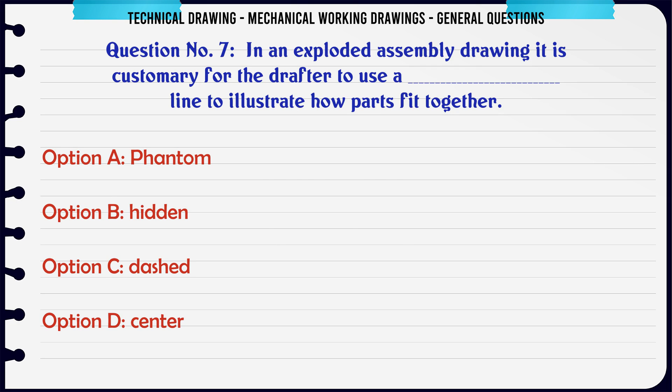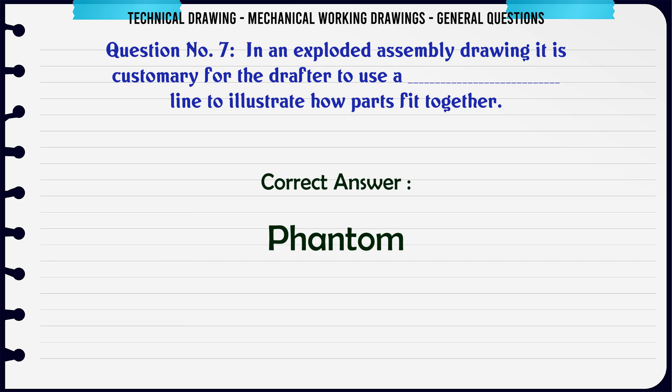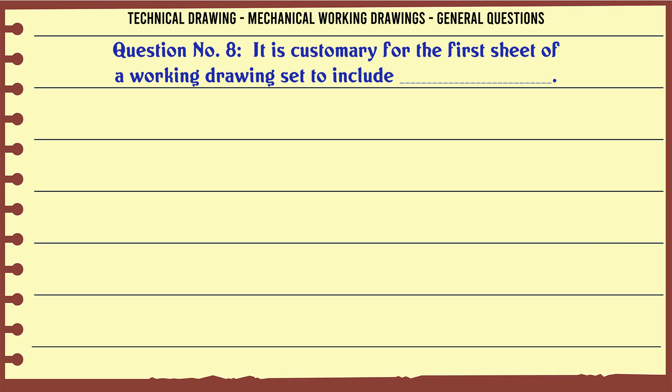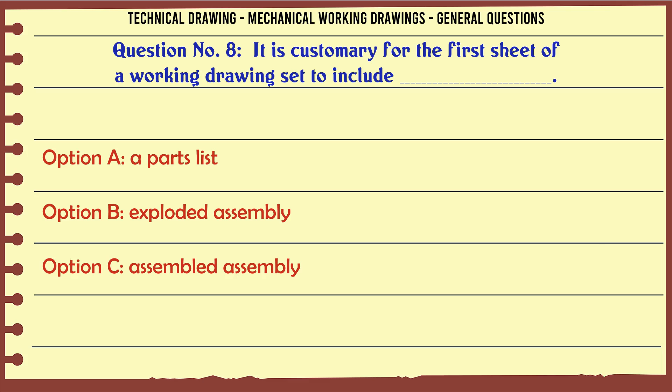It is customary for the first sheet of a working drawing set to include: A. A parts list, B. Exploded assembly, C. Assembled assembly, D. All of the above.